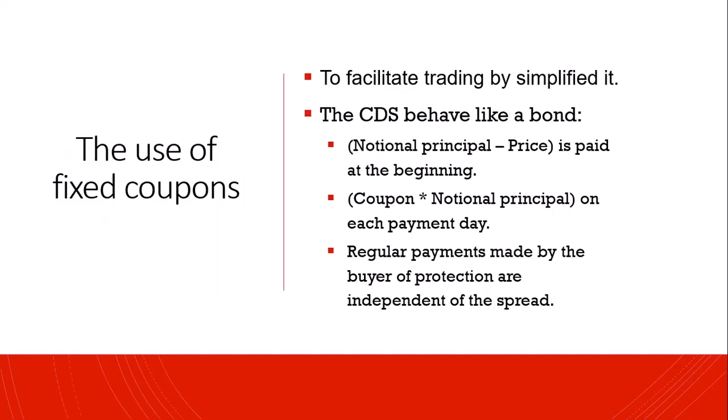One of the main problems of credit default swaps is their complexity. To reduce this, there are certain CDS instruments that use fixed coupons, making the CDS behave like a bond. At the beginning of the contract, a price is calculated using CDS market data. The difference between the notional principal and the price is paid by one party upfront. After that, a coupon times the notional principal is paid by the protection buyer on each payment date, making the regular payments independent of the spread.